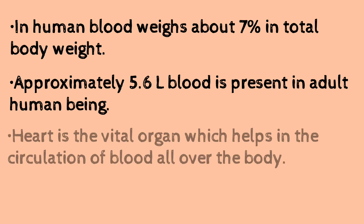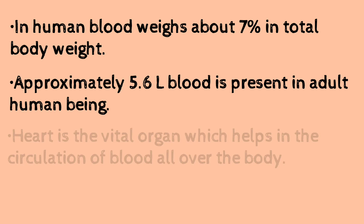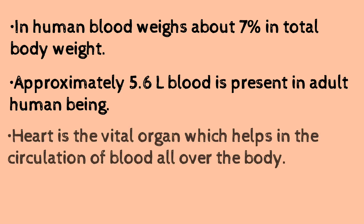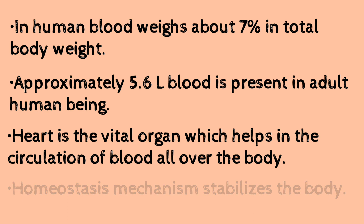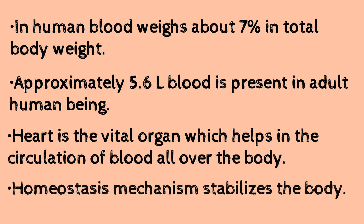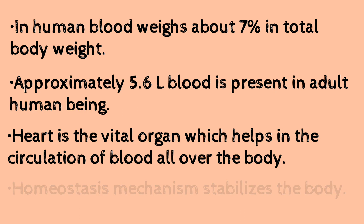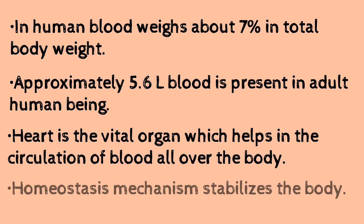Blood circulates through the heart in the circulation process. Blood also helps maintain stable limits in the body. It maintains homeostasis by regulating factors such as heat, osmotic pressure, electrolytes, and various other factors. These are the various factors maintained through the homeostasis mechanism.